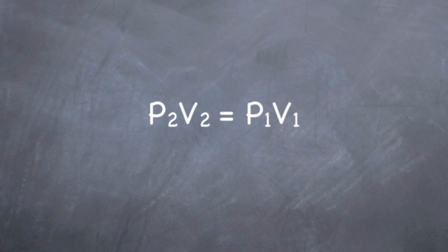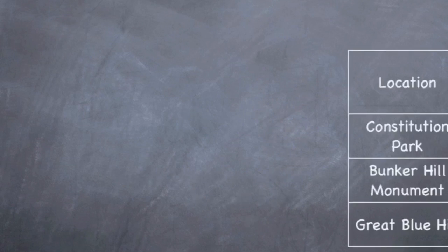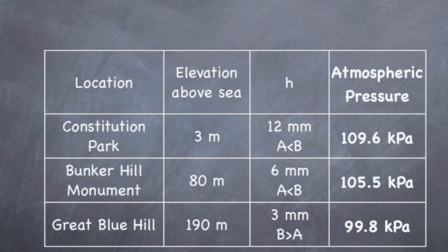Now we can take this relationship and rearrange it to actually solve for the pressure in each of these locations. Using the initial conditions of the air in tube B of P1 equals 101.6 kilopascals, which is the pressure the day that I built my manometer, and the initial volume of tube B, that is the air volume of 22 mils. Using this equation, we get an actual atmospheric pressure at Constitution Park of 109.6 kilopascals, at Bunker Hill Monument, 105.5 kilopascals, and at the Great Blue Hill of 99.8 kilopascals.